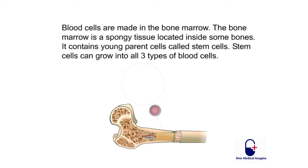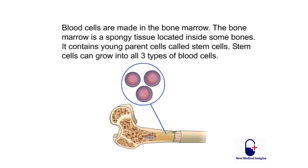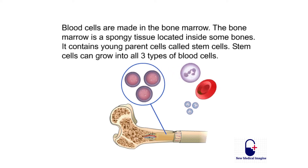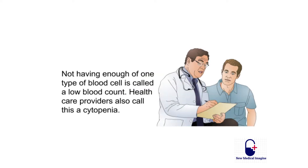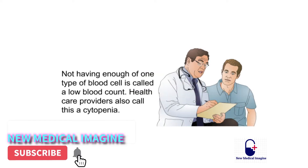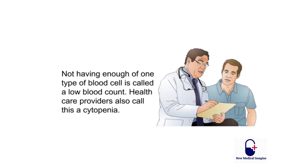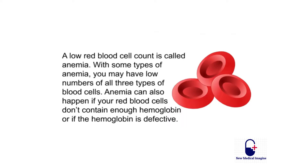Blood cells are made in the bone marrow — a spongy tissue located inside some bones. It contains young parent cells called stem cells, which can grow into all three types of blood cells. Not having enough of one type of blood cell is called a low blood count. Healthcare providers also call this a cytopenia. A low red blood cell count is called anemia.